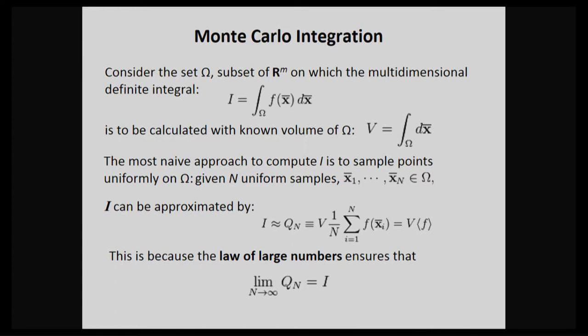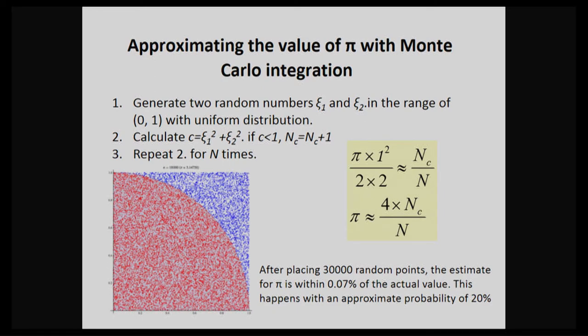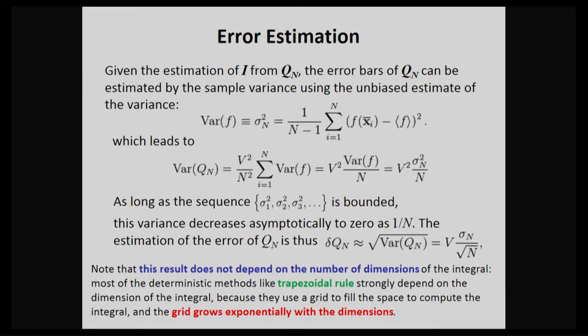For example, you can use this to estimate, again, the number of pi. And here it tells you a very important property of Monte Carlo integration because it doesn't change for the scaling for different dimension. Always one over square root of n. If you use, for example, trapezoidal rule, then it will be terrible. You don't have this kind of nice property. And therefore people have some faith in Monte Carlo method like me.